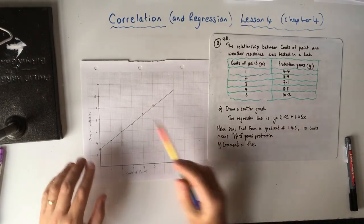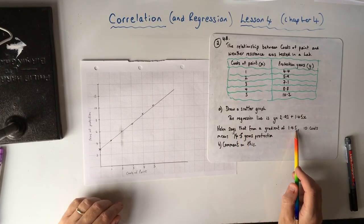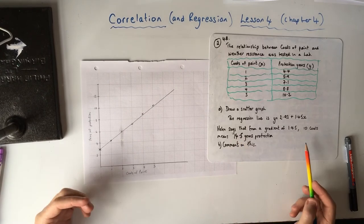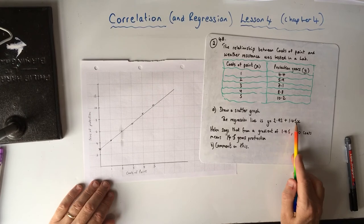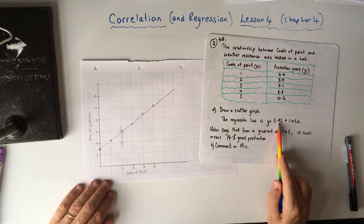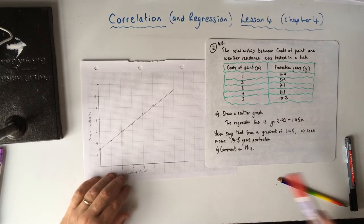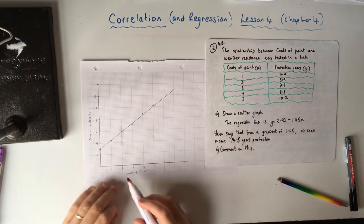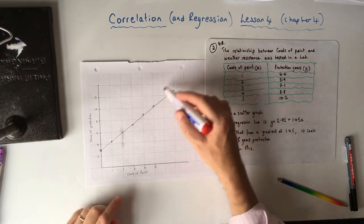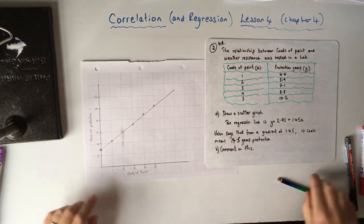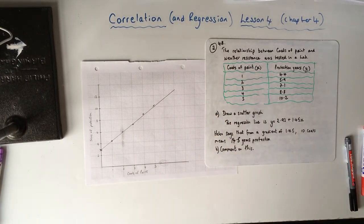The question asks about Helen, who says from a gradient of 1.45, ten coats would give 14.5 years' protection. Comment on this. Well, first, you can see what Helen has done — she's put 10 in for X and got 14.5, but she hasn't added on the 2.93. That's the first thing wrong. But also, what Helen is doing is extrapolation — going 10 coats beyond the five-coat range. You might be okay extrapolating just past the range, but after that you can't trust data from extrapolation.